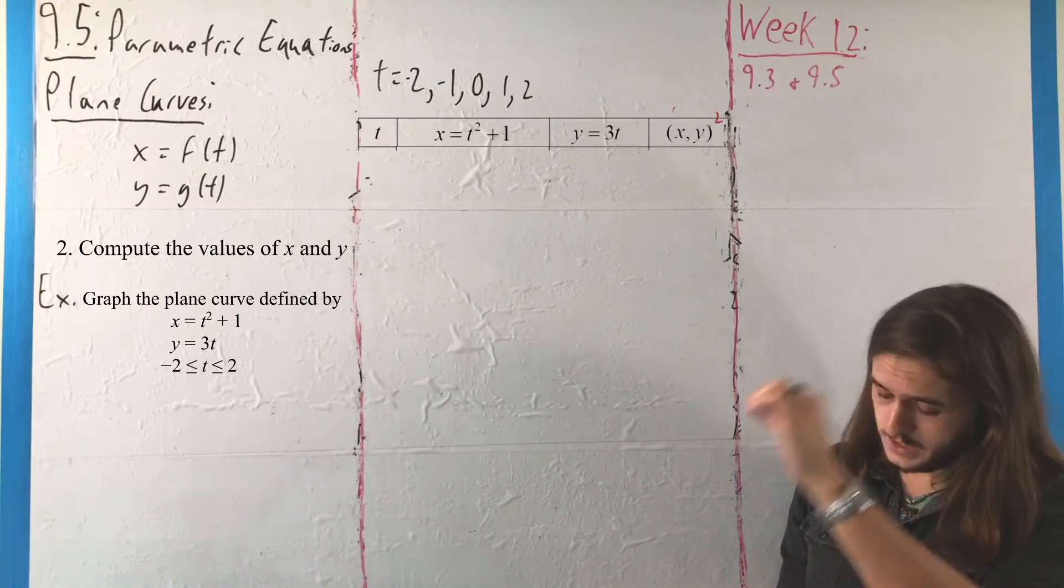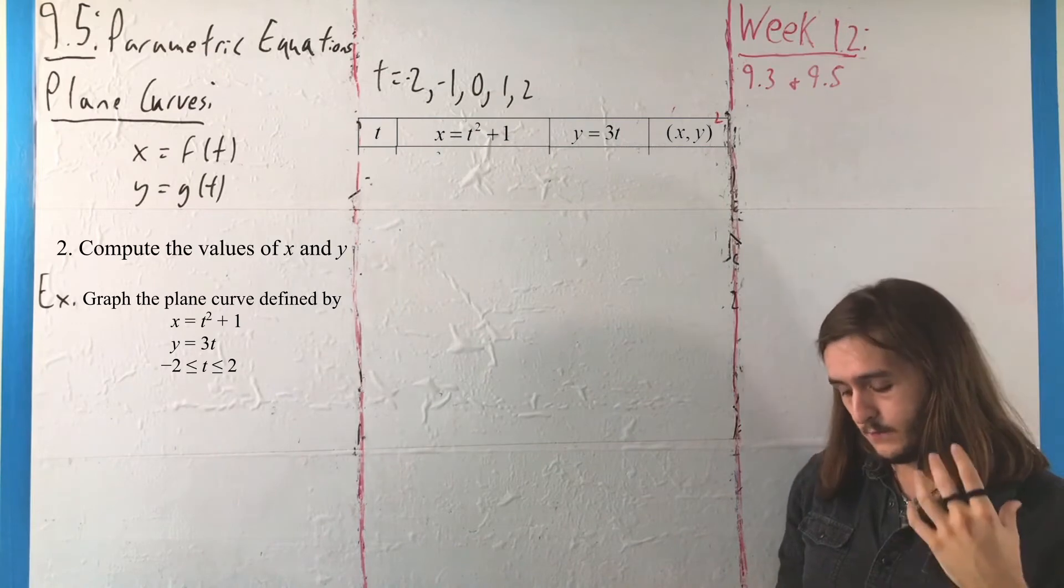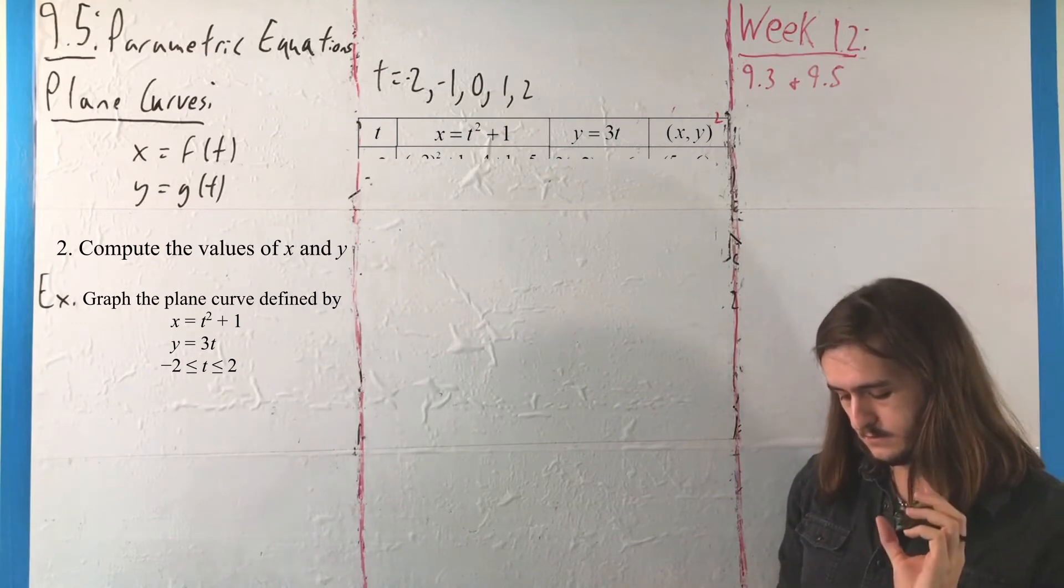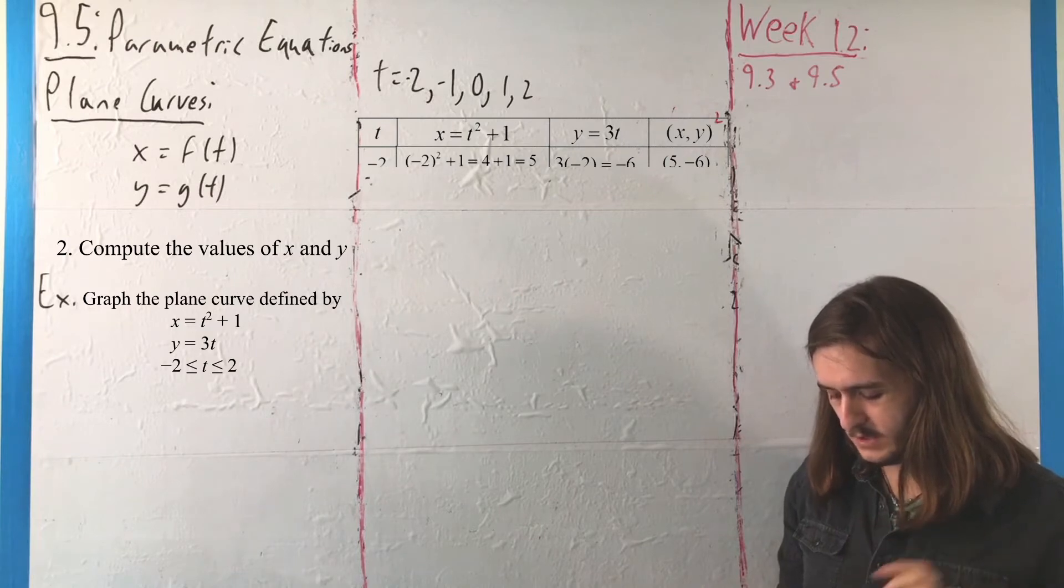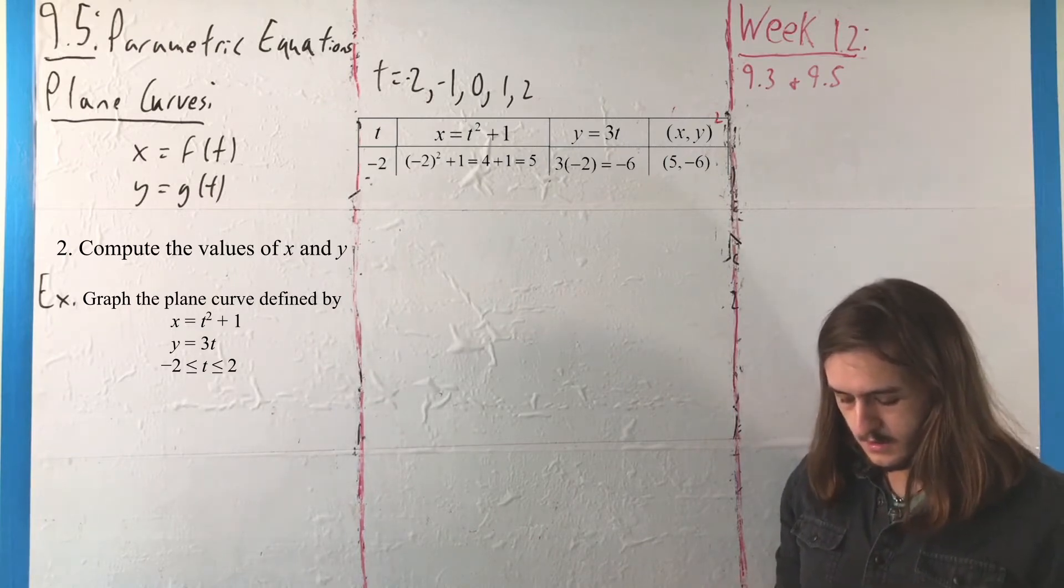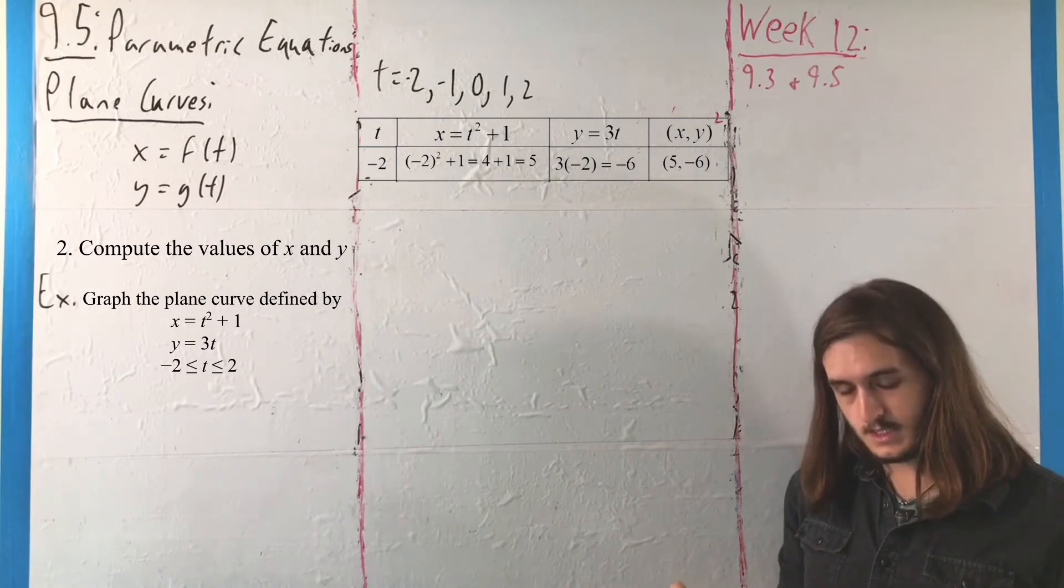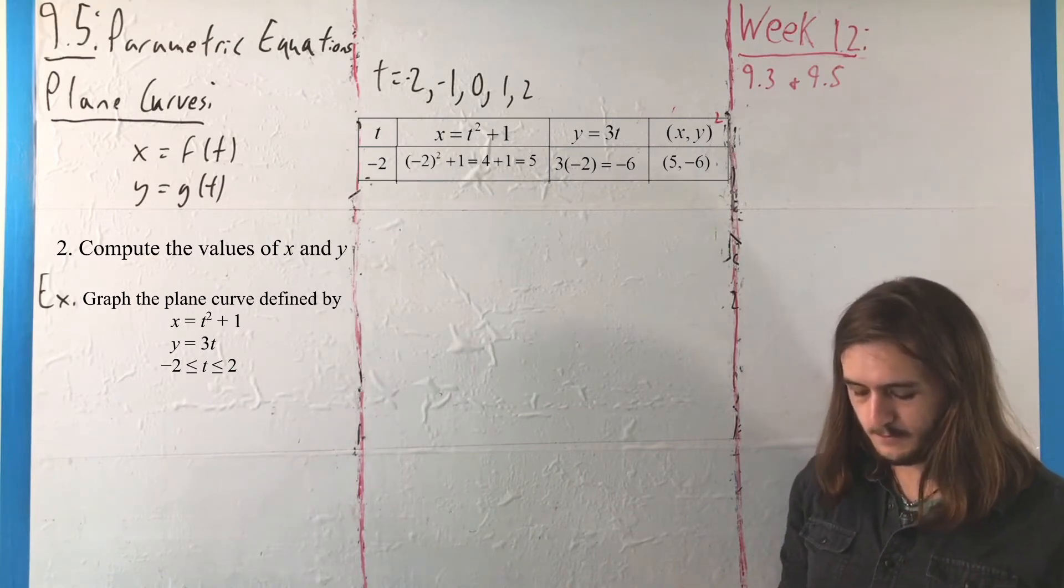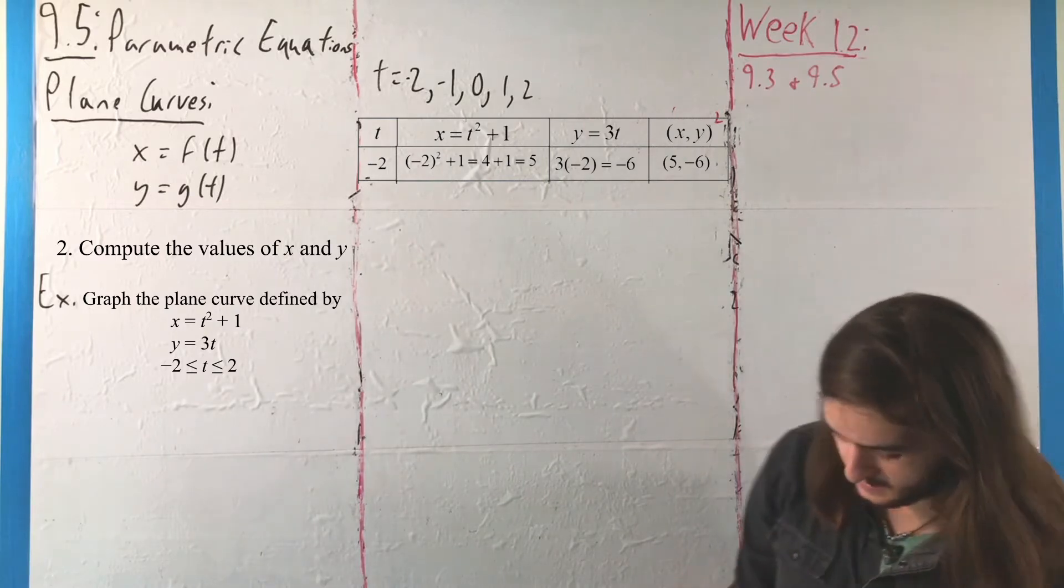When t is equal to negative 2, we have for x, negative 2 squared plus 1, which is going to be 4 plus 1, or 5. Then we have 3 times negative 2, or negative 6, for the point (5, -6).